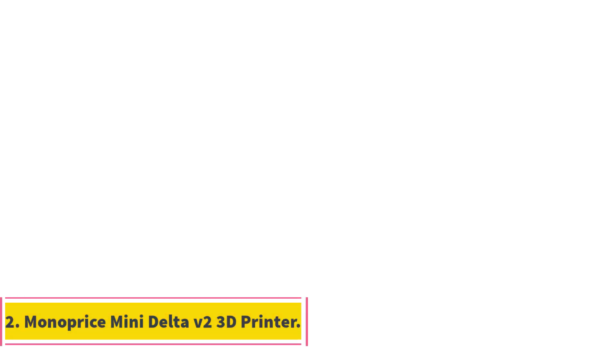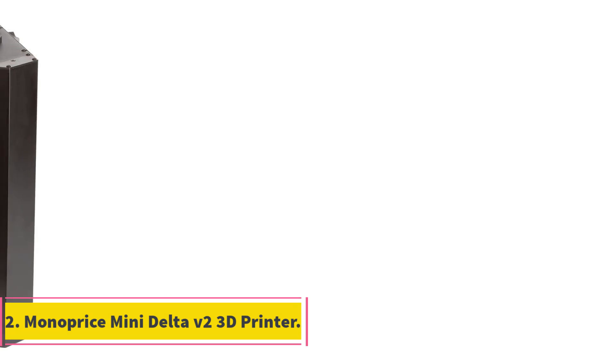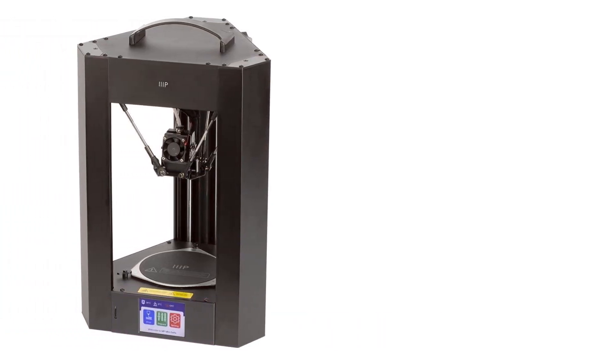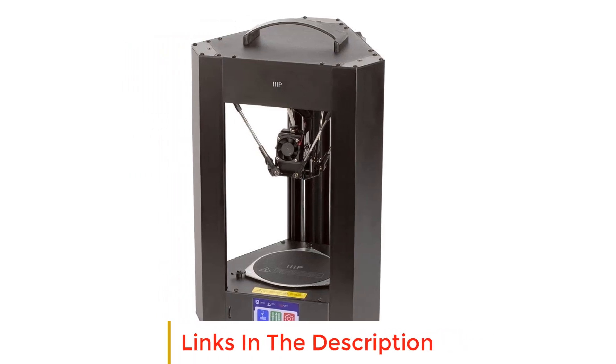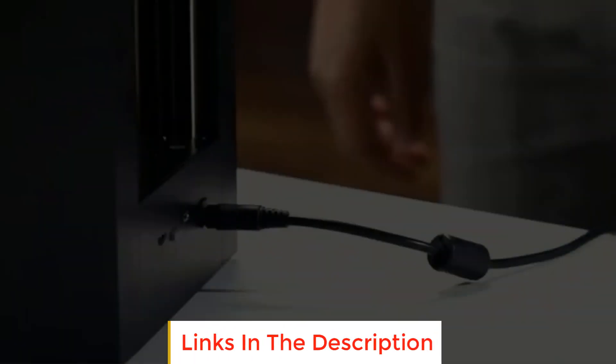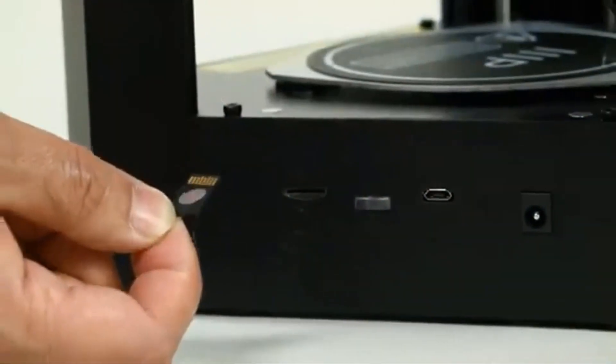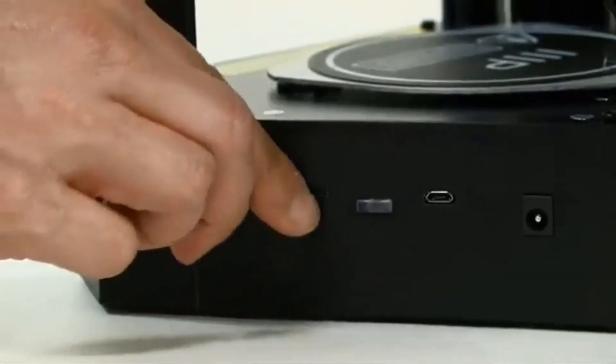Number 2. Monoprous Mini Delta V2 3D Printer. The Monoprous Mini Delta V2 3D Printer is a user-friendly printer that offers convenience and versatility. It features a touchscreen control with updated firmware and a user interface (UI) that has been improved based on user feedback.